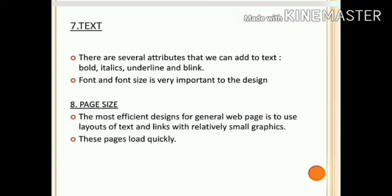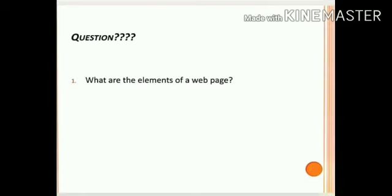In summary, the components of a web page are: first the banner, second the menu system, third the content area, fourth footer, fifth cascading style sheets, sixth color, seventh text, and the last one is page size. Your assignment question is: what are the elements of a web page?